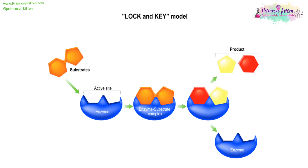Amylase, protease, and lipase are all enzymes and work with the lock and key mechanism. We have our enzyme which has a very specifically shaped active site, so only one substrate or a couple of substrates with the complementary site are going to fit in there. They're going to form an enzyme-substrate complex, and then the enzyme is either going to break apart things or join together things. It is then going to release the products and the enzyme is unchanged and can be used again.